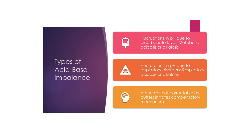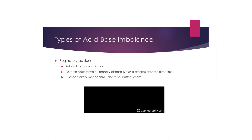When an acid-base disorder is not immediately correctable by the body's buffering system, the body initiates compensatory mechanisms. Respiratory acidosis is usually related to hypoventilation, and its compensatory mechanism is the renal buffer system. Causes include airway obstruction, cardiac arrest, overdoses of CNS-depressant drugs like heroin, submersion, respiratory arrest, pulmonary edema, closed head injury — causing Cushing's reflex with decreased respirations — chest trauma, and carbon monoxide poisoning. Hypoventilation can quickly develop a potentially fatal acidosis, making it impossible for the slow-reacting renal system to compensate; patients can quickly die.